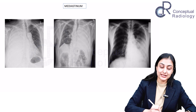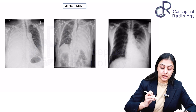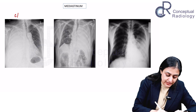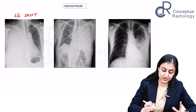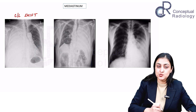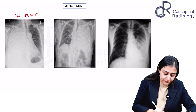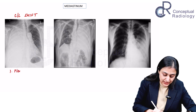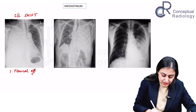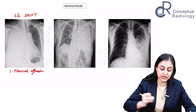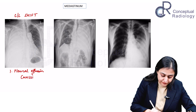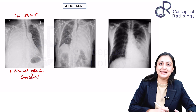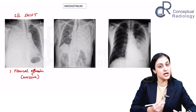Now look at the mediastinum. When we look at the airway, we see there is a contralateral shift — the airway is shifted contralaterally. So the localization is on the right side. In such cases with contralateral shift, your biggest and first differential is going to be a pleural effusion — a massive pleural effusion pushing the mediastinum to the opposite side, since the entire hemithorax is opacified.